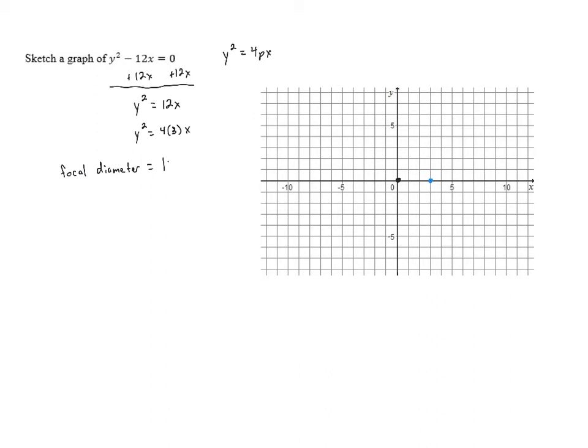And that is given by the absolute value of 4p. And we know here that 4p is equal to 12, and the absolute value of 12 is 12. So the focal diameter is 12.